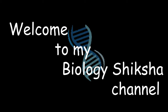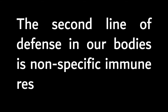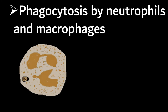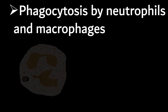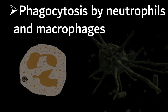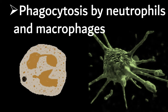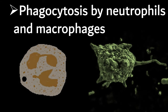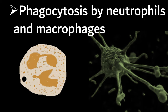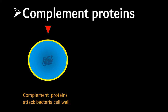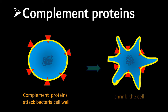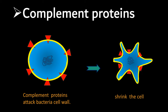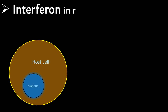Welcome to my biology shiksa channel. The second line of defense in our bodies is non-specific immune responses: phagocytosis by neutrophils and macrophages. Complement proteins attack the bacteria cell wall and shrink the cell. Interferon is produced in response to viral infection.